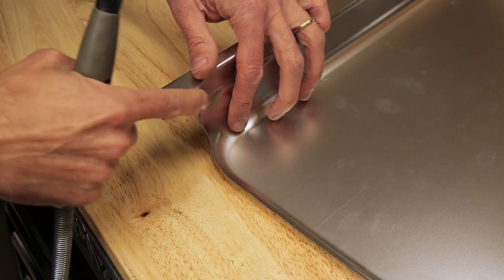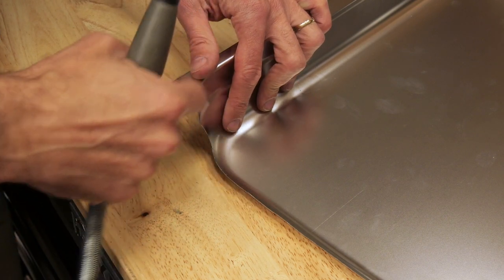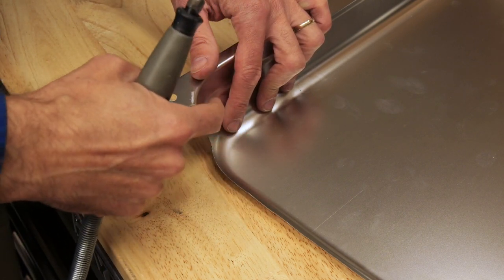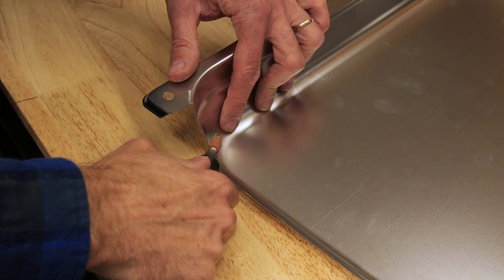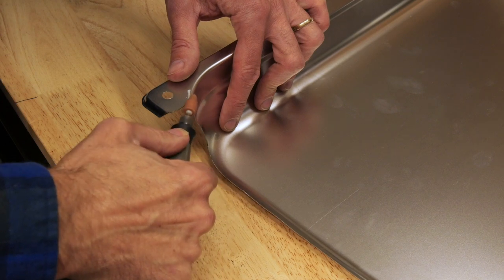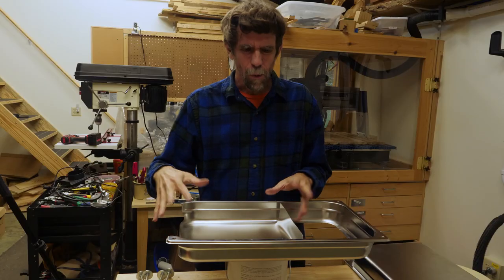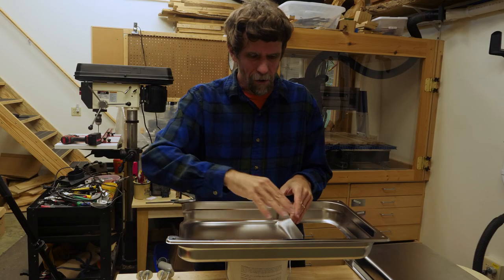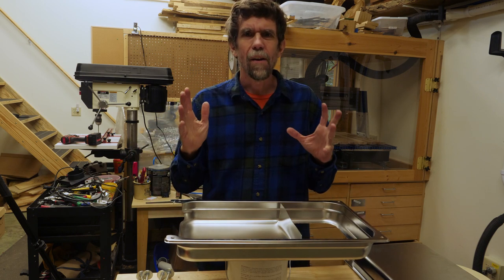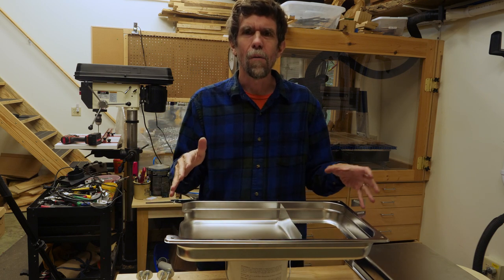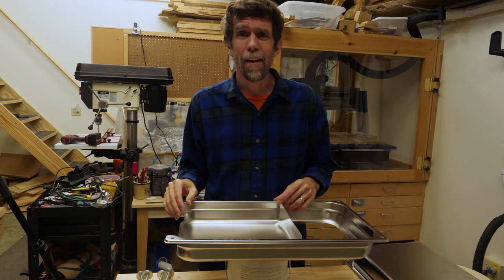The angle grinder did a pretty good job of cleaning up the large burrs from where the metal was cut, but there are still some small burrs around the edge. To clean those up, I'm going to use a rotary tool. I went over all the edges and deburred them so there are no sharp burrs. Once I did that, I cleaned the whole thing really well so I won't get any bits of metal into the food. Now I'm ready to put it together and try it out.